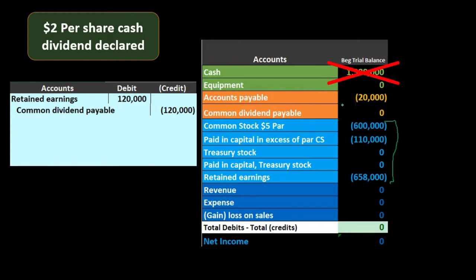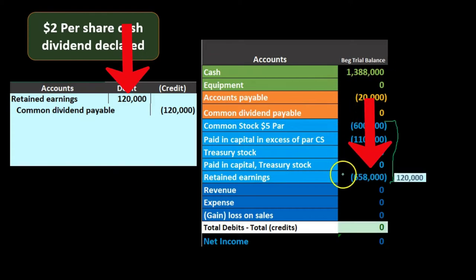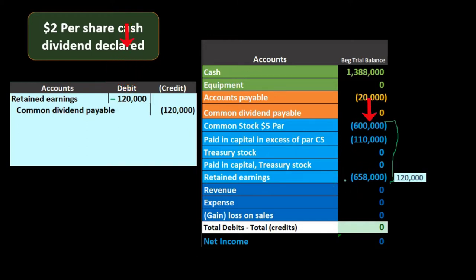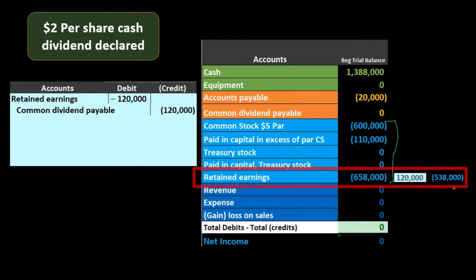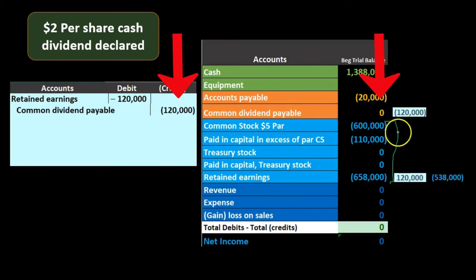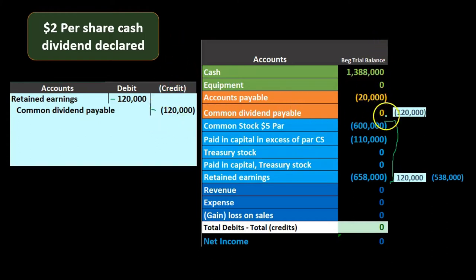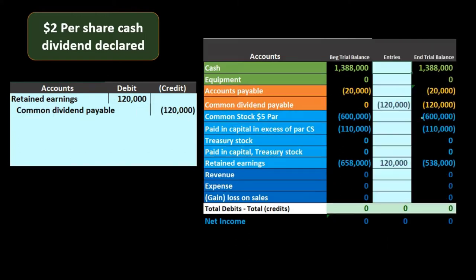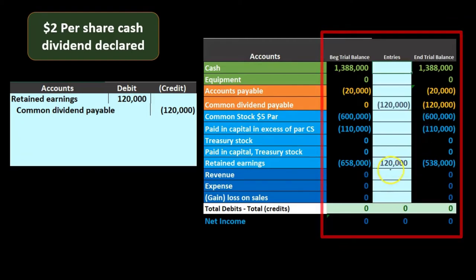Then we're going to credit the common dividends payable, which is a liability — we owe this money but haven't yet paid it. So we record the debit to retained earnings, which will make it go down — we're reducing the accumulation of earnings. The other side goes to the common dividends payable, which is at zero and goes up in the credit direction. So we decrease retained earnings and we now have a payable recorded.